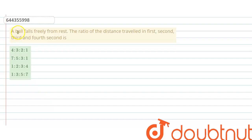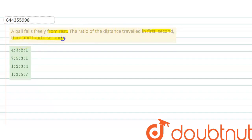Hello everyone, let me explain this question to you. A ball falls freely from rest. The ratio of distance travelled in the 1st, 2nd, 3rd and 4th second is — there are 4 options given.